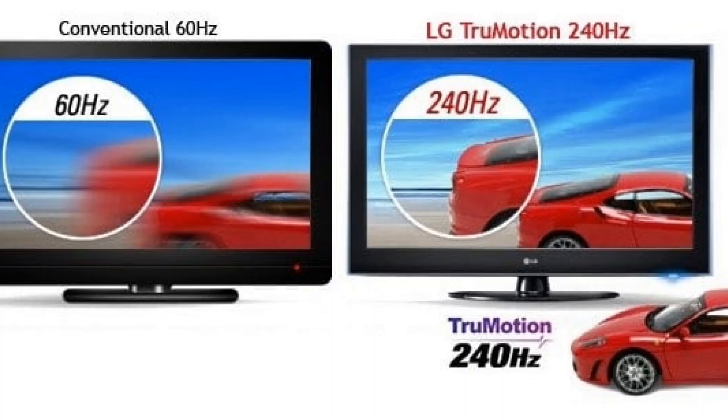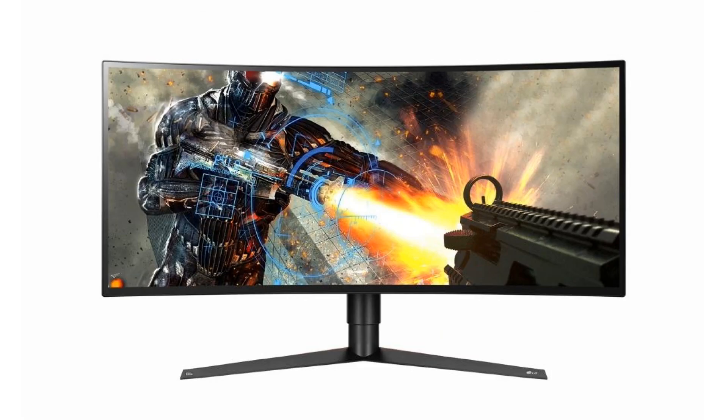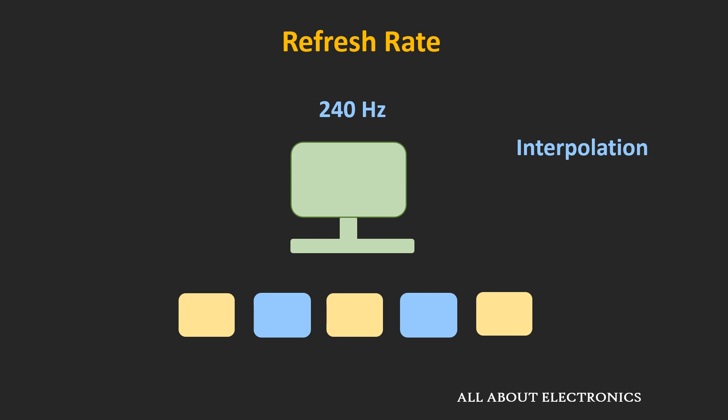These displays claim to provide a motion blur-free viewing experience with high frame rates. However, their native refresh rate is still either 60 Hz or 120 Hz. Using techniques like interpolation and black frame insertion, they virtually increase the effective frame rate of the display to reduce motion blur. In the case of interpolation, based on the current frame and the next frame, the display itself generates intermediate frames. In the case of black frame insertion, alternate black frames are inserted between regular frames to reduce motion blur.